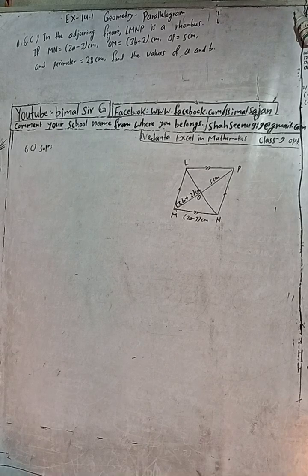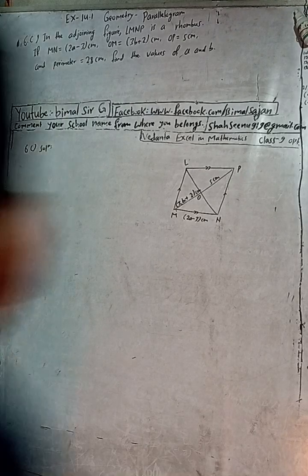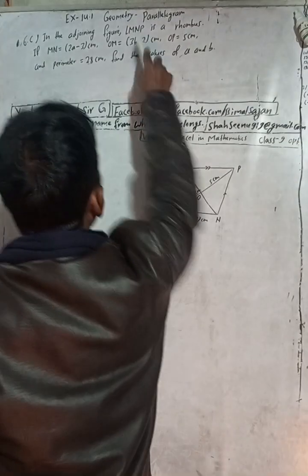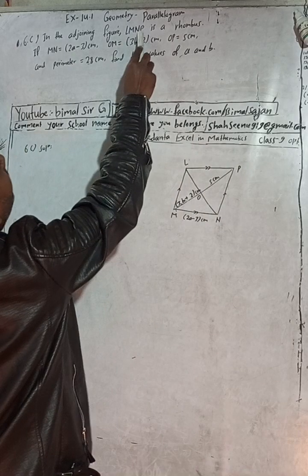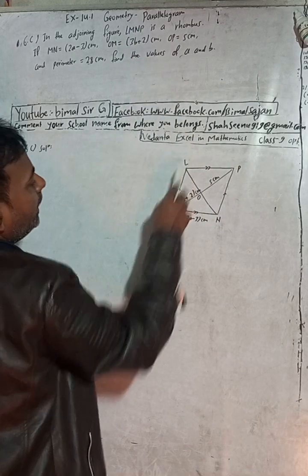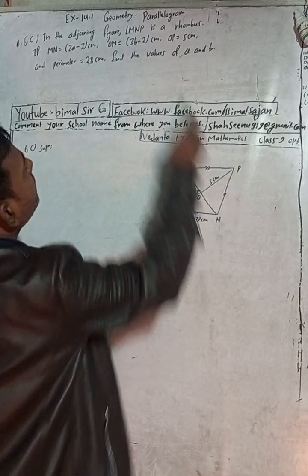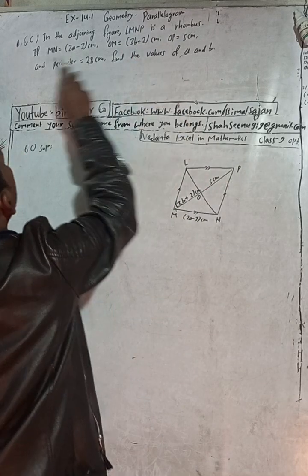This is question number 6C. The question is here in the adjoining figure. In this figure, LMNP is a rhombus.